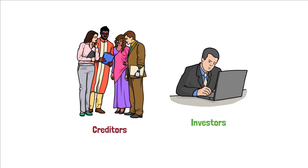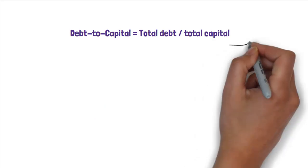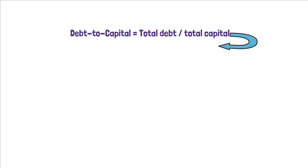We measure the debt ratio as total debt over total capital, where total capital is the sum of total debt and equity. Let's take a simple numeric example to understand this better.